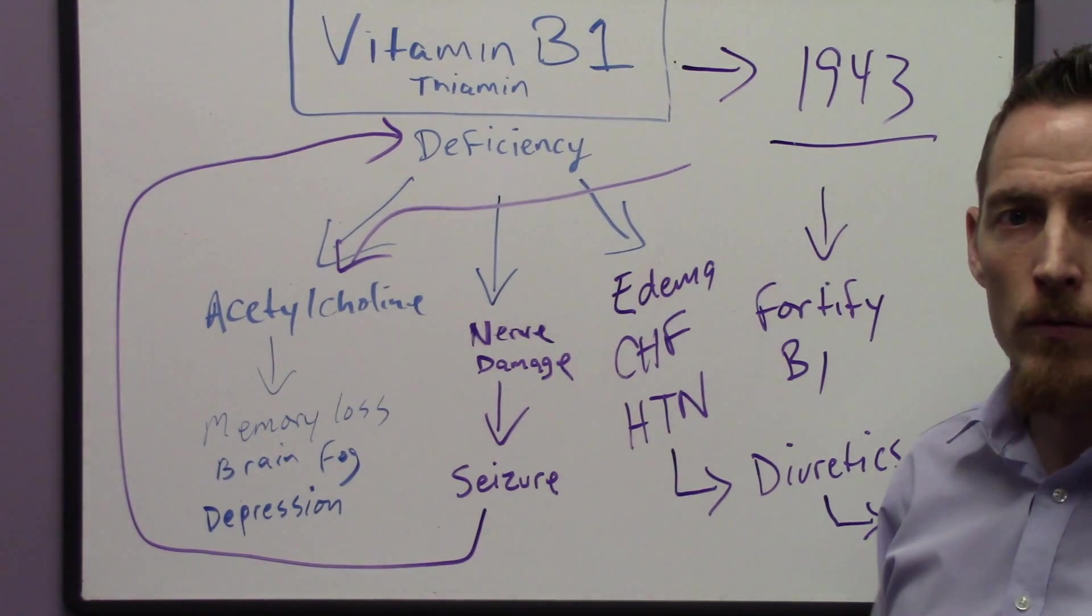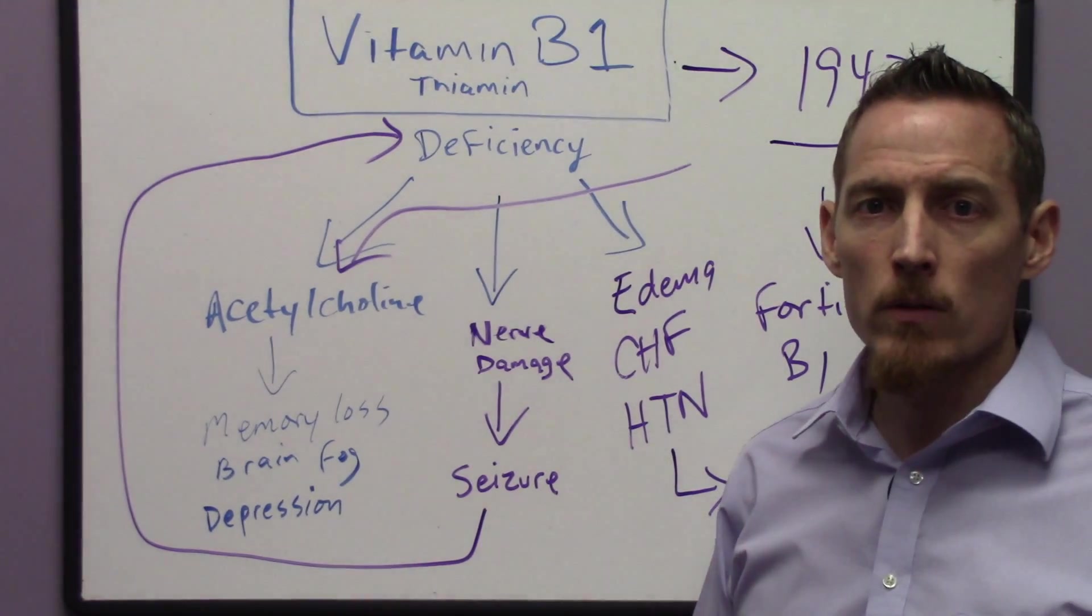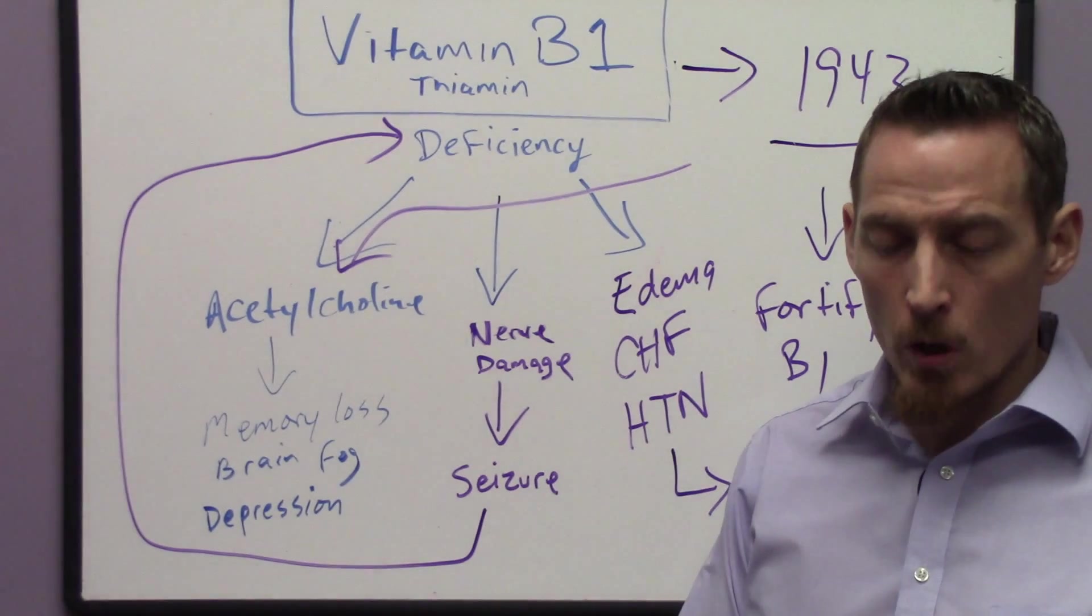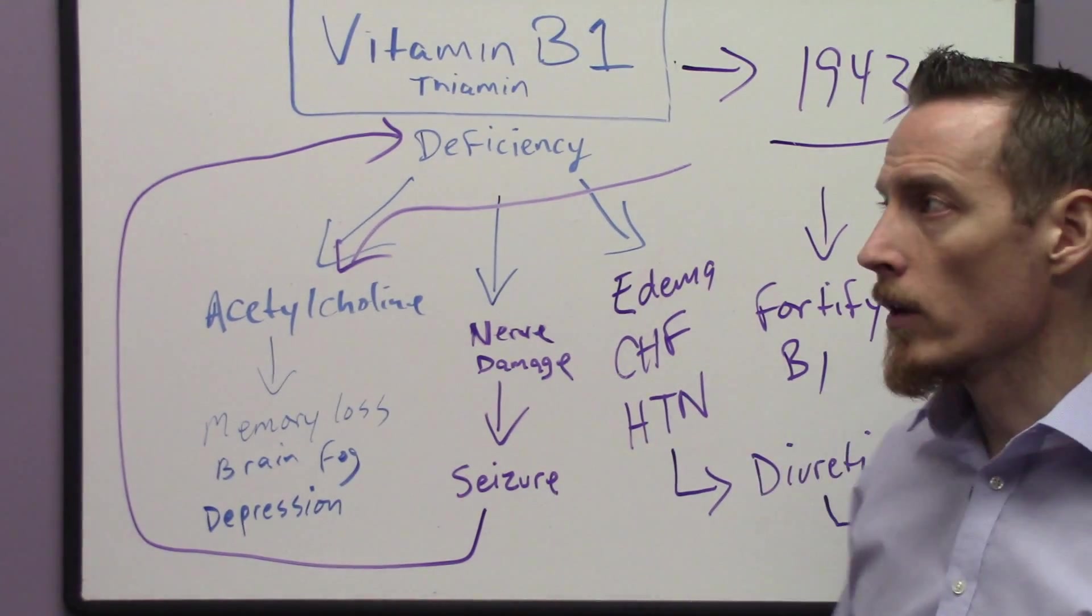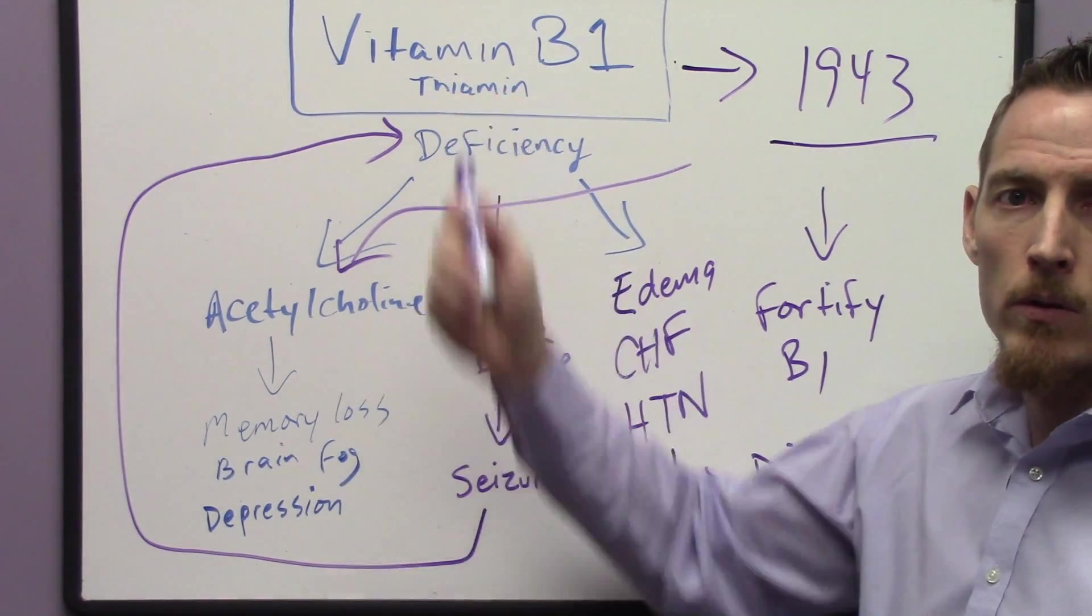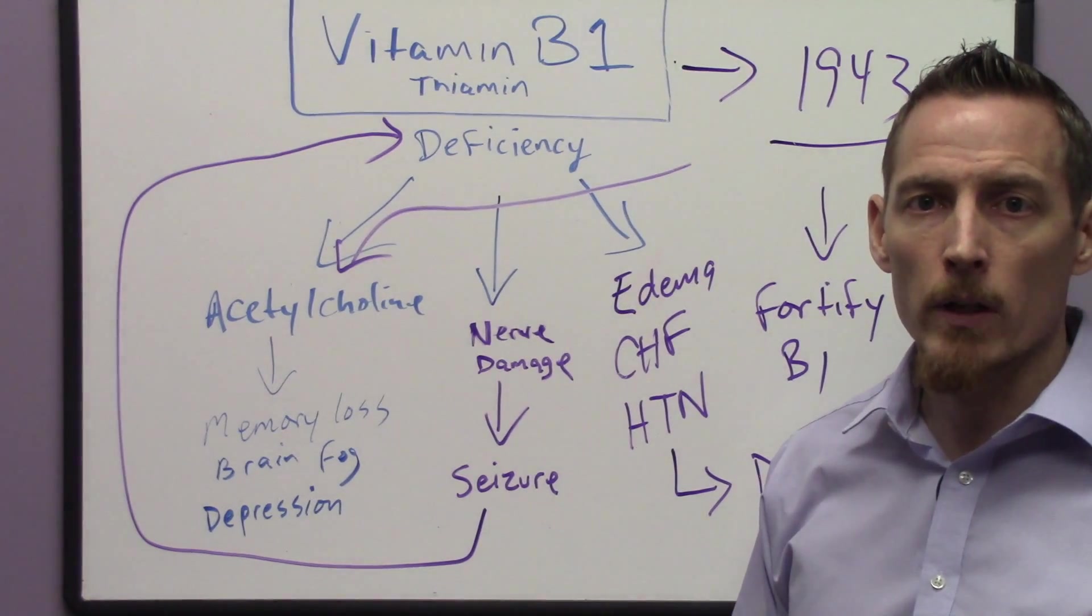There's been a number of studies that shows that vitamin B1 deficiency is very prominent in patients who have a long history of diuretic use. So if you're one of those, if you've been taking a diuretic to treat your blood pressure issue or congestive heart failure, you definitely want to make sure that your doctor is following up with you to check your vitamin B1 levels on a regular basis.